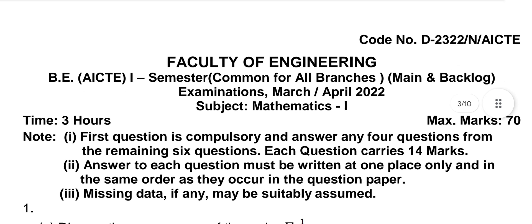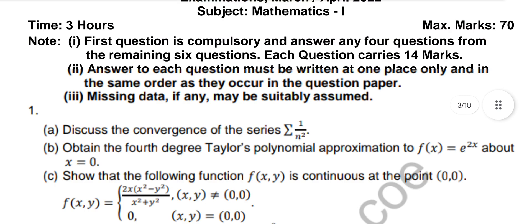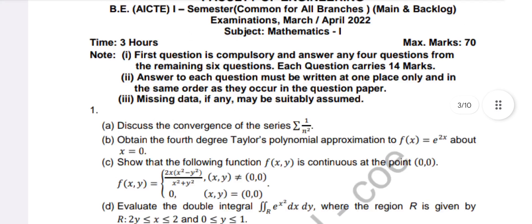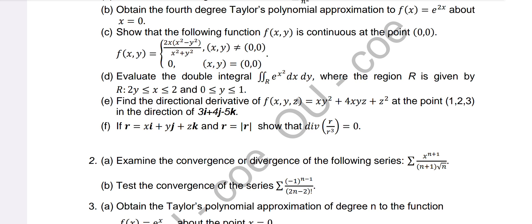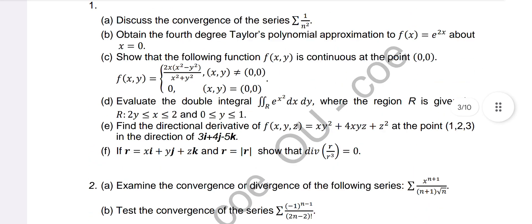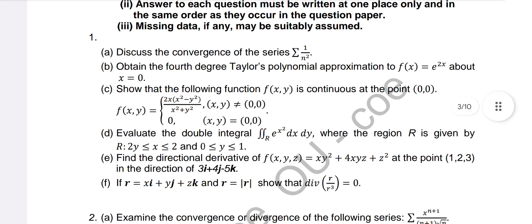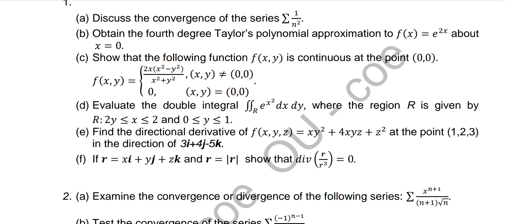Now coming to the another question paper, March/April 2022 — this is the new question paper pattern. Seven twos are 14, so seven short answers for 14 marks. Long answers: four questions at 14 marks each = 56 marks, so 56 + 14 = 70 marks. Short answer topics: discuss the convergence using the P-test directly, obtain the fourth degree Taylor's polynomial up to four terms, show the function is continuous — limit and continuity problem, evaluation of double integral, and two vector calculus problems on r̄.